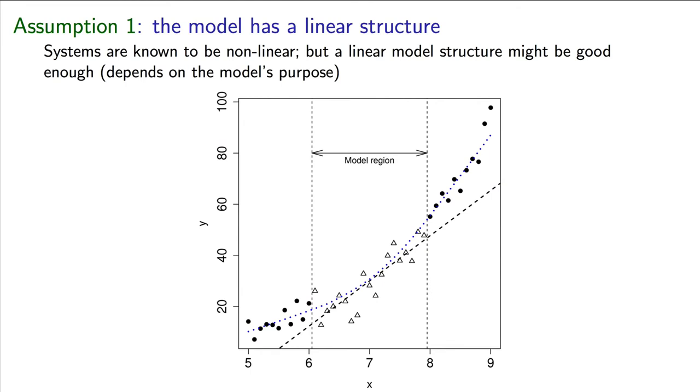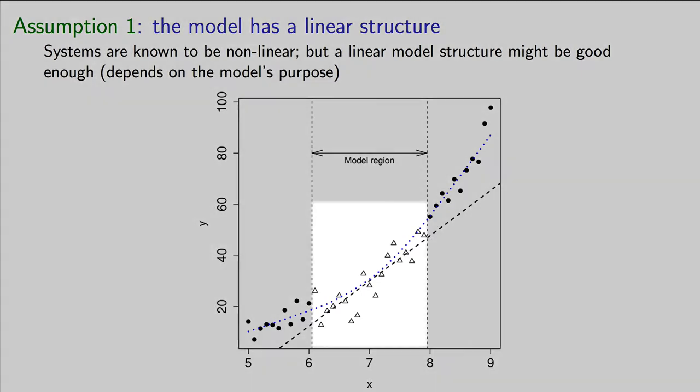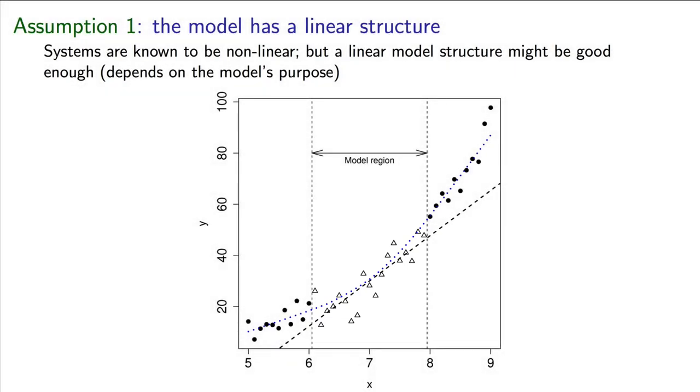Our data might be non-linear, yet we can try and force it into a linear form. As you can see in this diagram, the system is known to be non-linear, but if we build a model over this small region here, the linear approximation is a valid one. Strictly speaking, we have not violated the linearity assumption, but points below 6 and above 8 on the x-axis will start to deviate from that assumption.